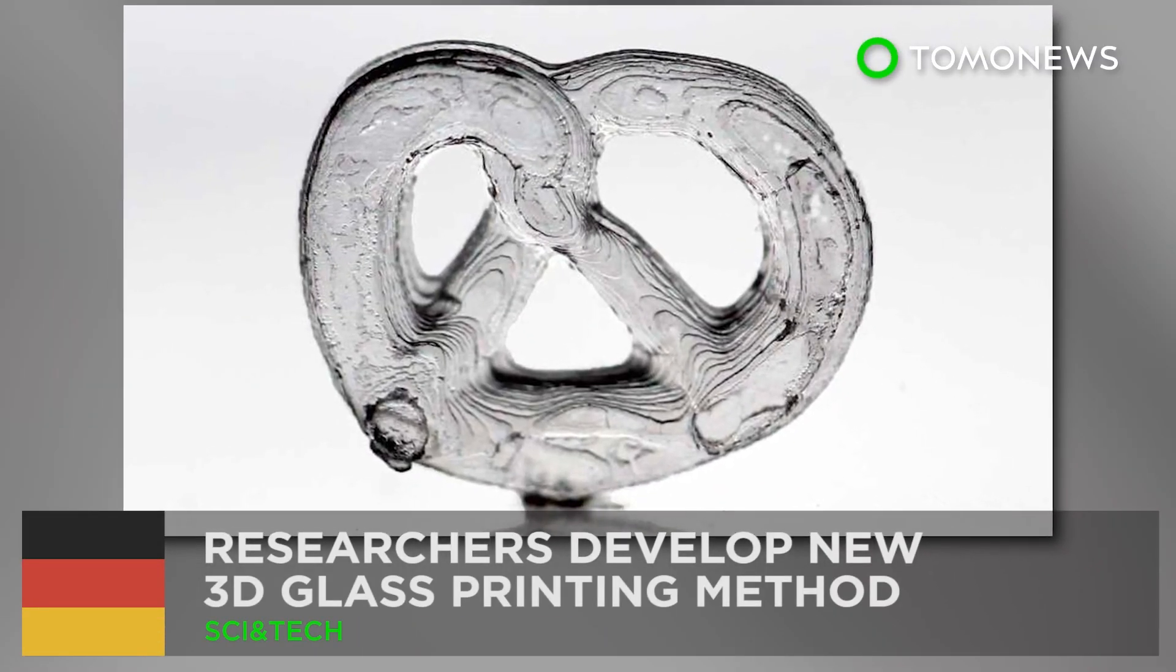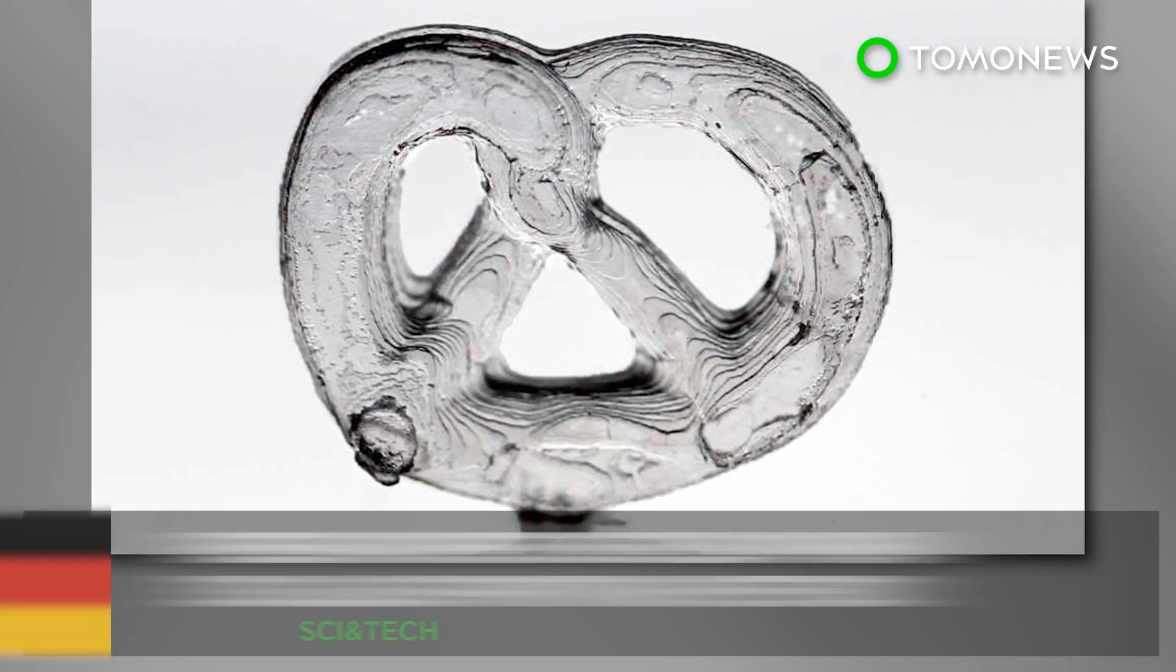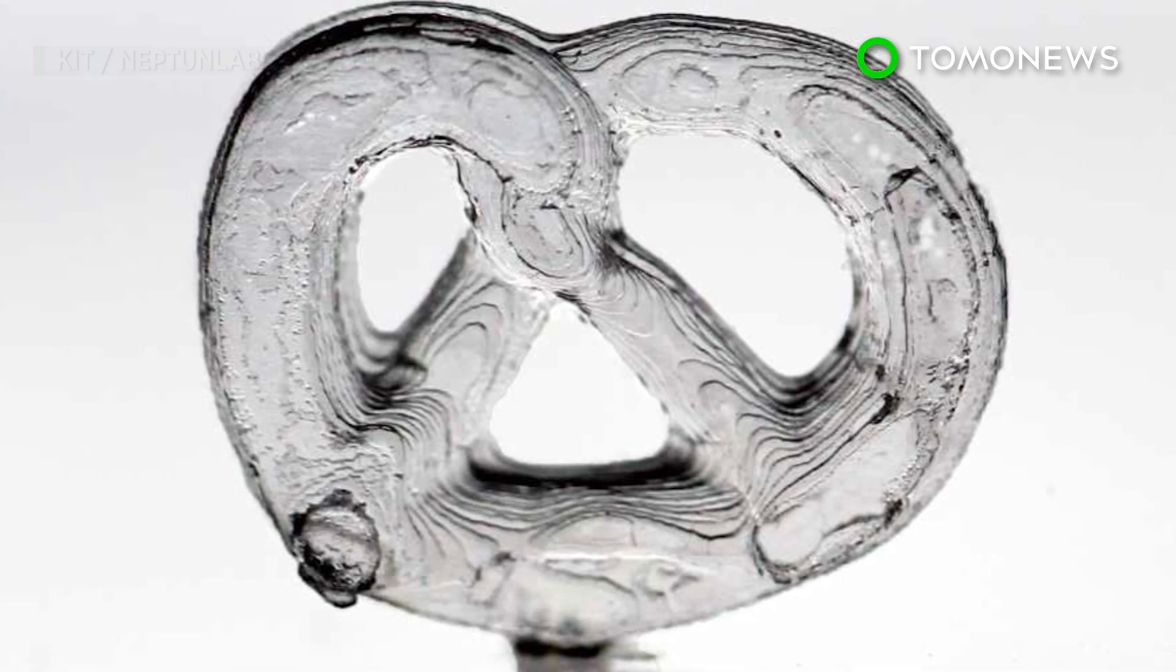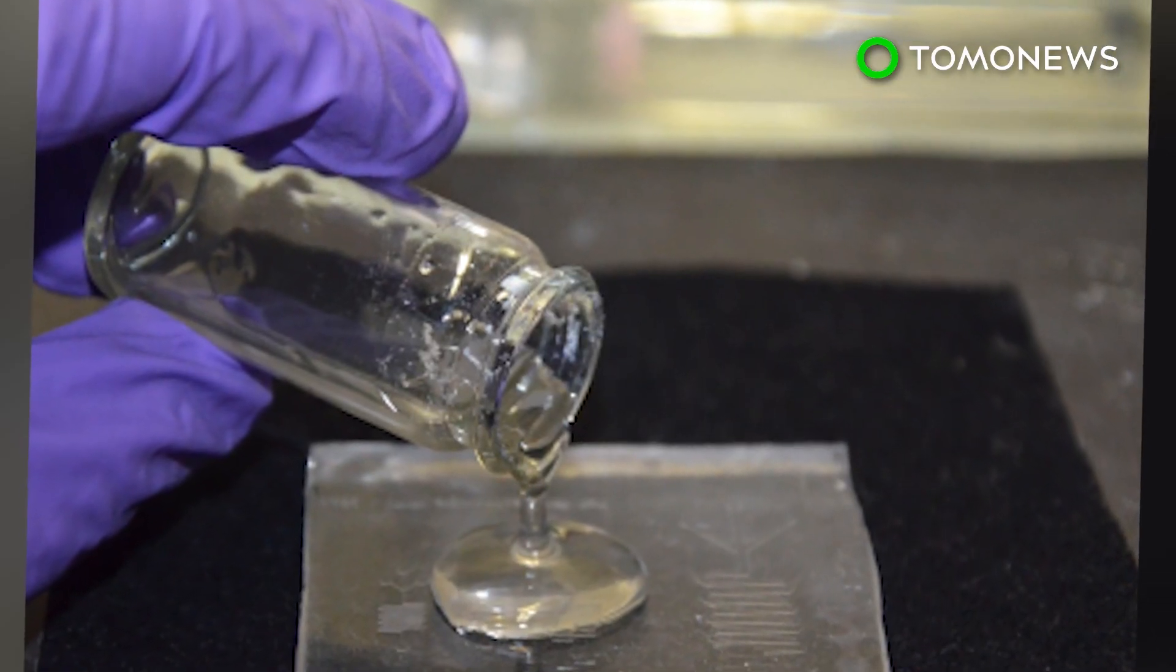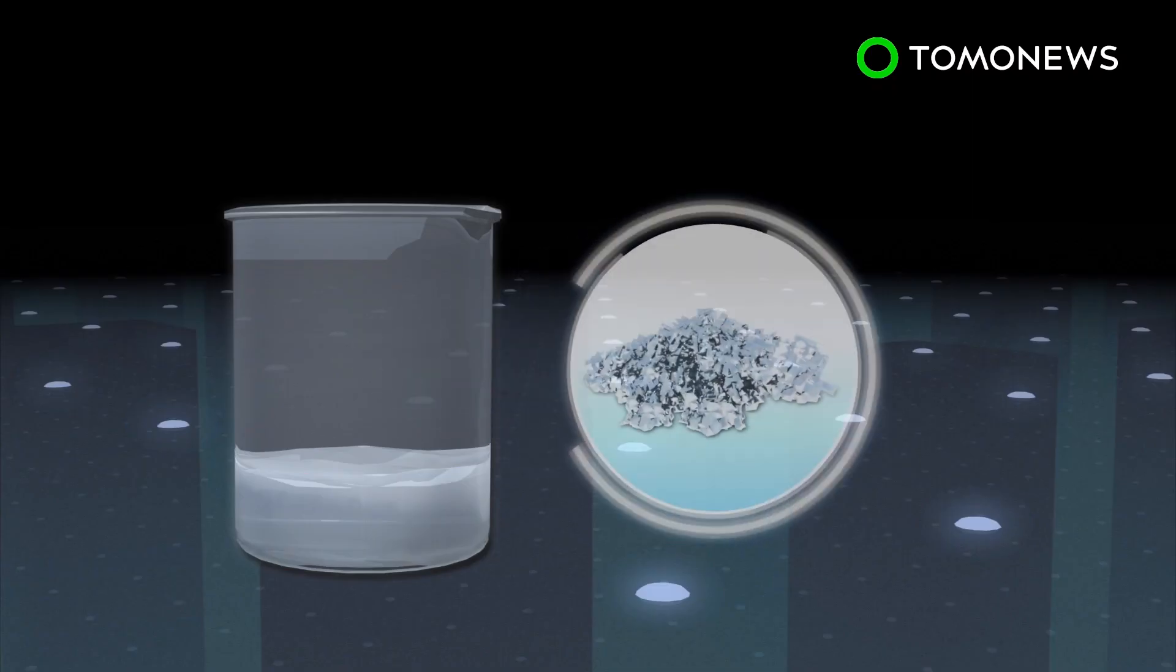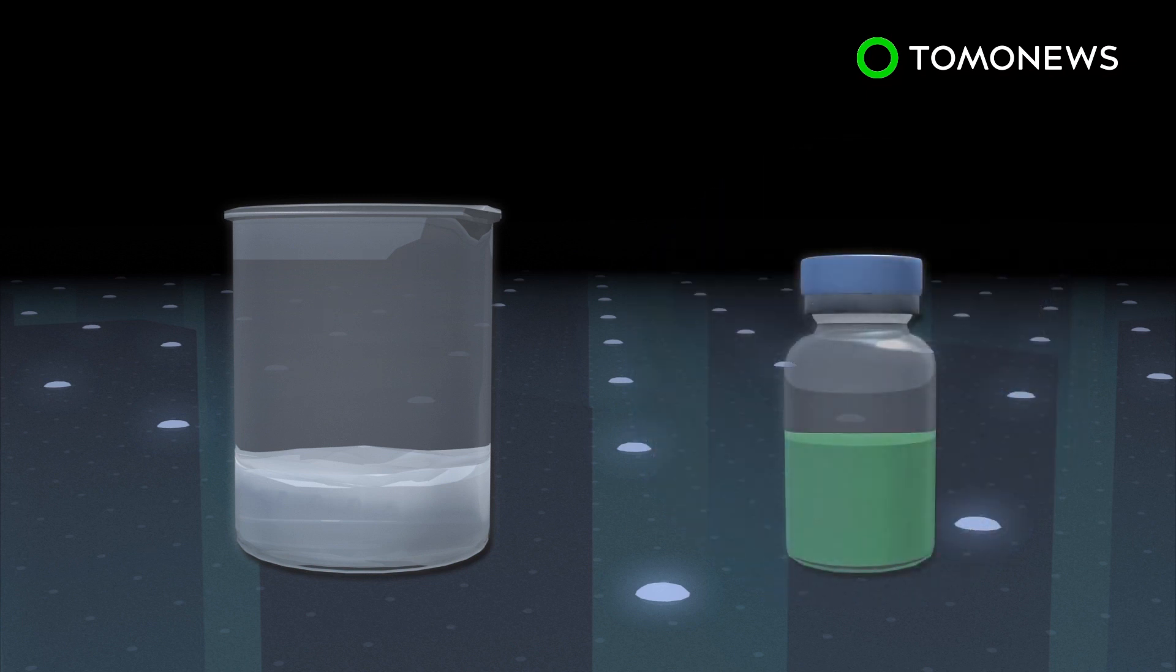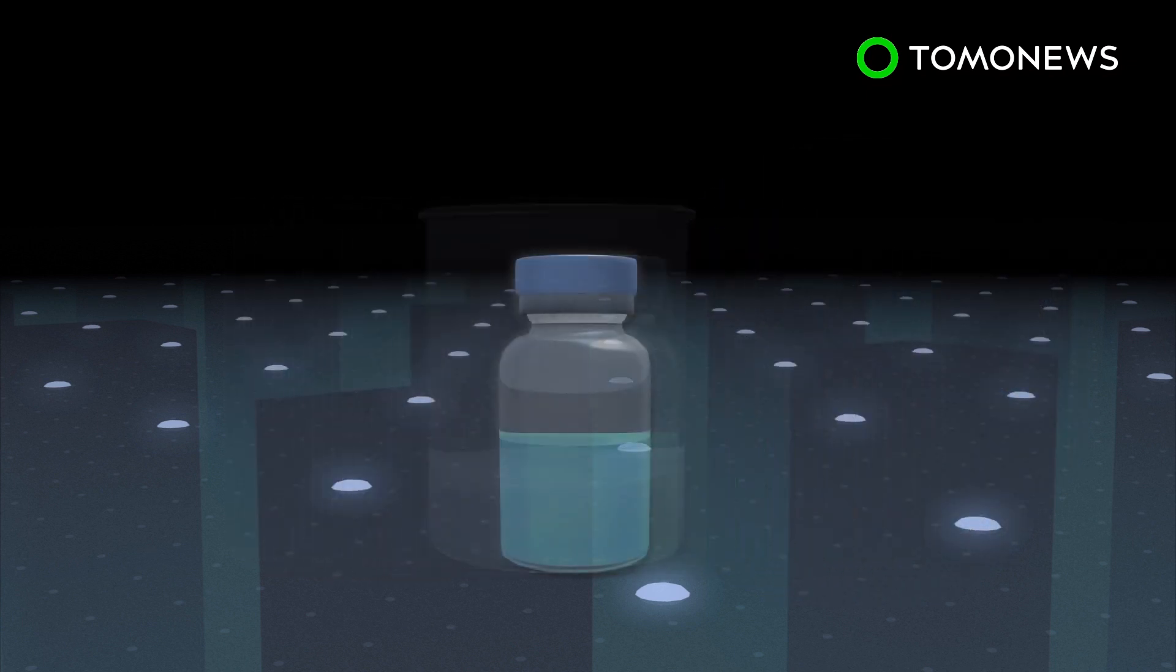Now we can make glass with a 3D printer. A group of German researchers have developed a new method for making glass with 3D printing technology. The 3D-printed glass is made from a mixture of glass nanoparticles and a photo-curable liquid, which acts as a binding agent.